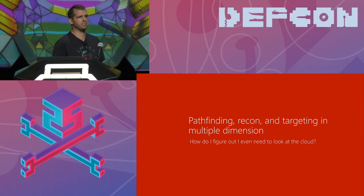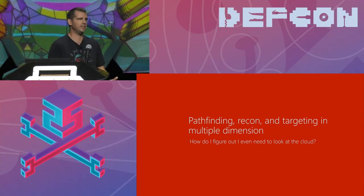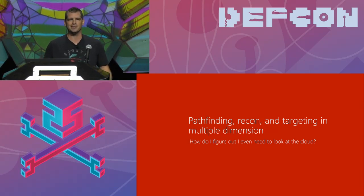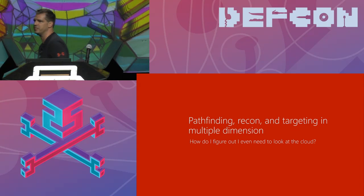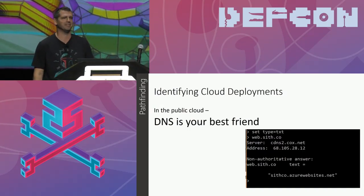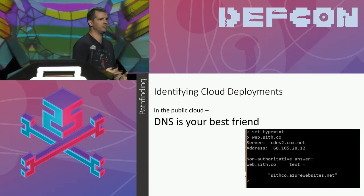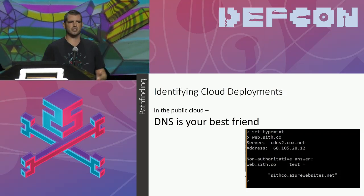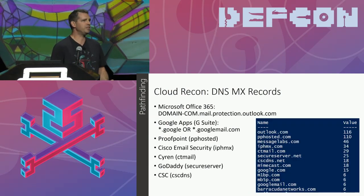Let's look at recon in a cloud type environment. You have a customer who's hired you to pen test or red team their environment, and they've added cloud to the scope. How do we identify what sort of cloud services they have? DNS is your best friend, just like it always has been. People put a lot of things into DNS to help services and users find other services, like MX records. We can find a lot of information from MX records by scanning DNS across a bunch of companies.